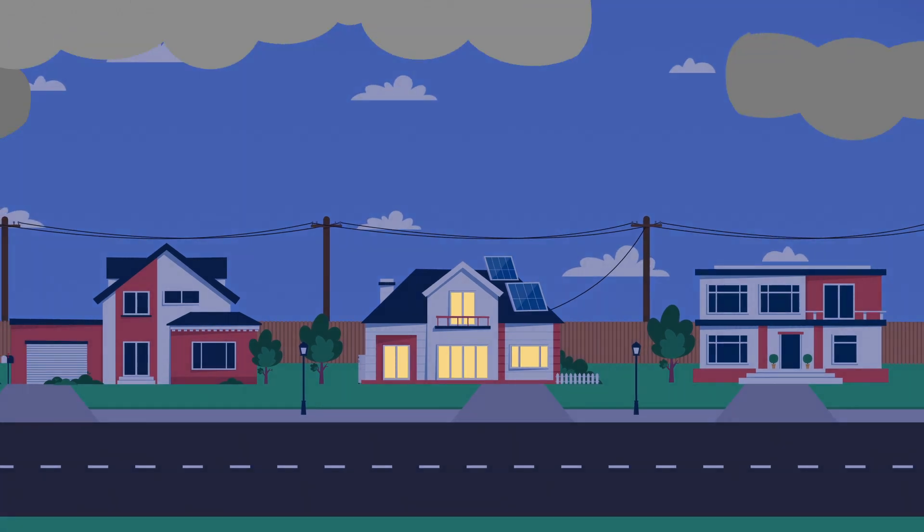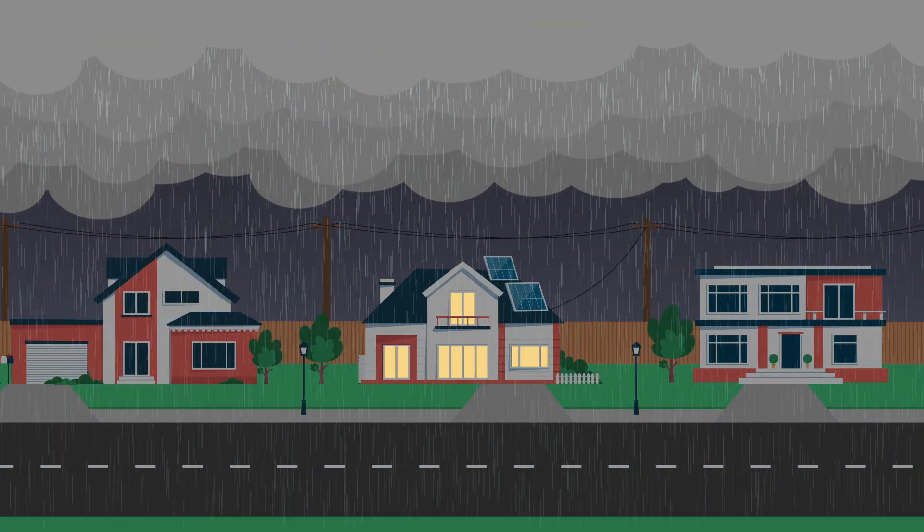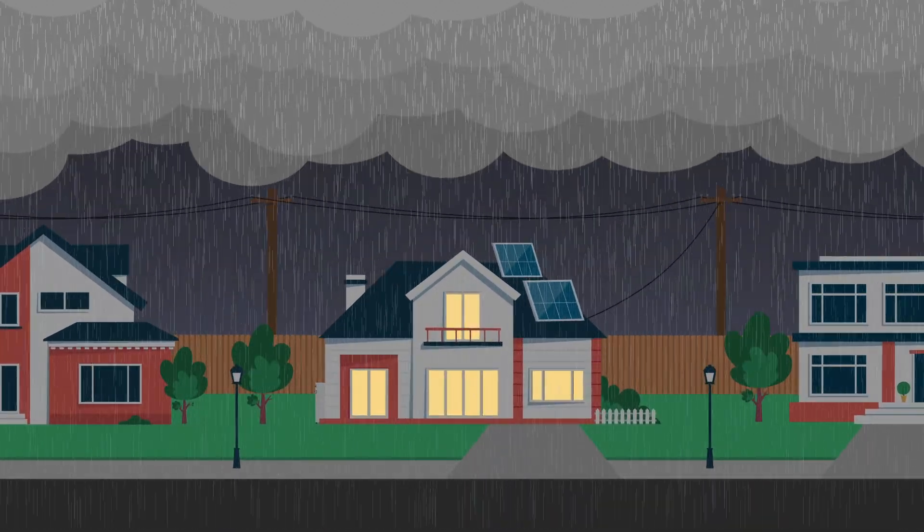A home battery system can also provide you and your family protection in a power outage by helping you to power essential appliances in your home when the grid goes down.